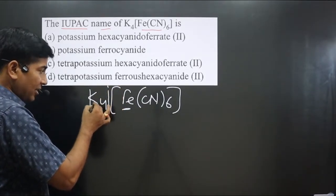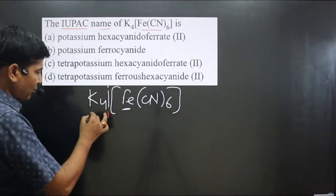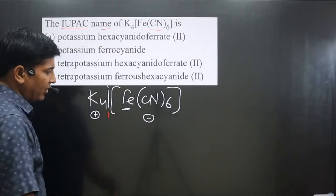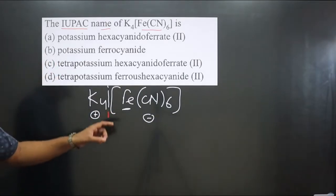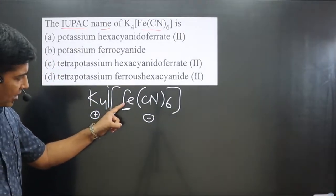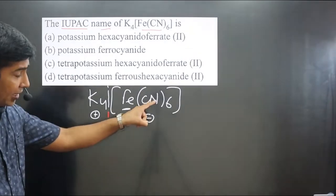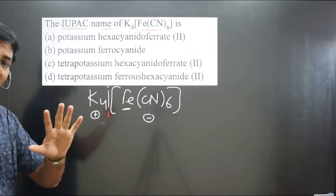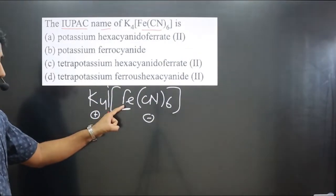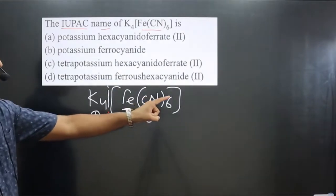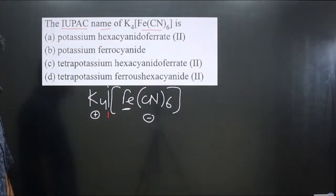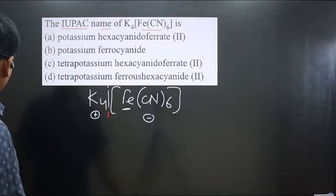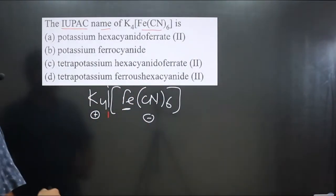We can break this complex: the first part is the positive part (K⁺) and the remaining portion is the negative part. The central element iron is present in the negative part, so we have to use the special name — for iron, the special name is 'ferrate'.